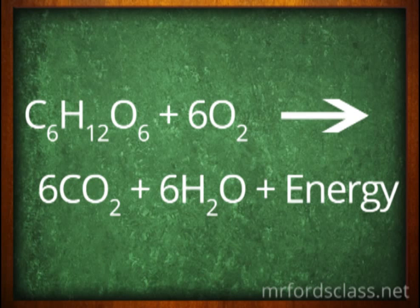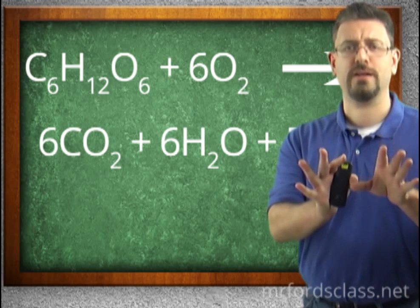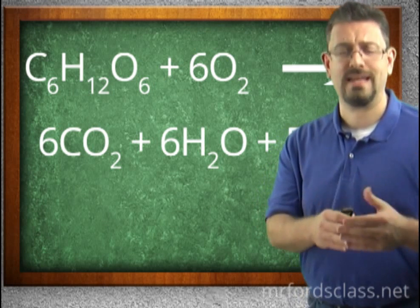The overall formula for cell respiration is the following: C6H12O6 plus 6O2 yields 6CO2 plus 6H2O plus energy. Now, don't freak. Do not freak out over this formula. It's really not that hard.